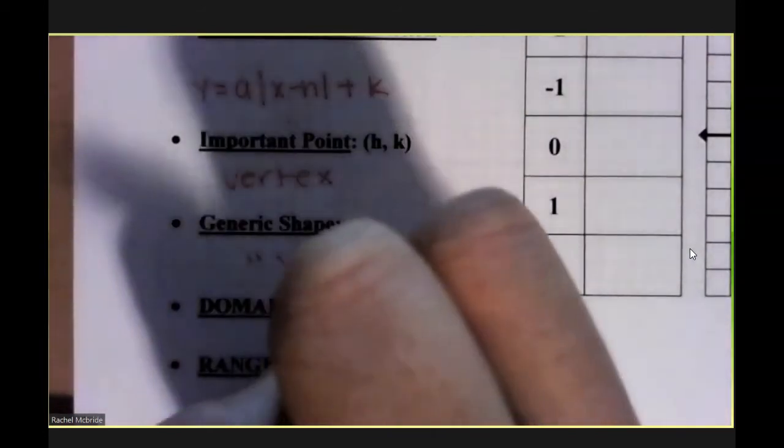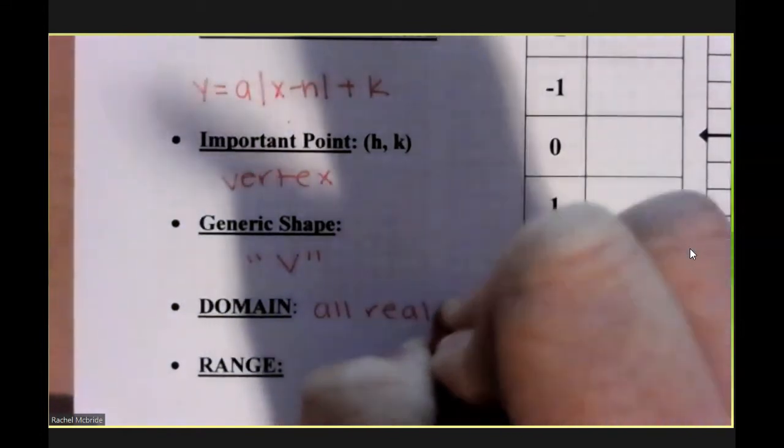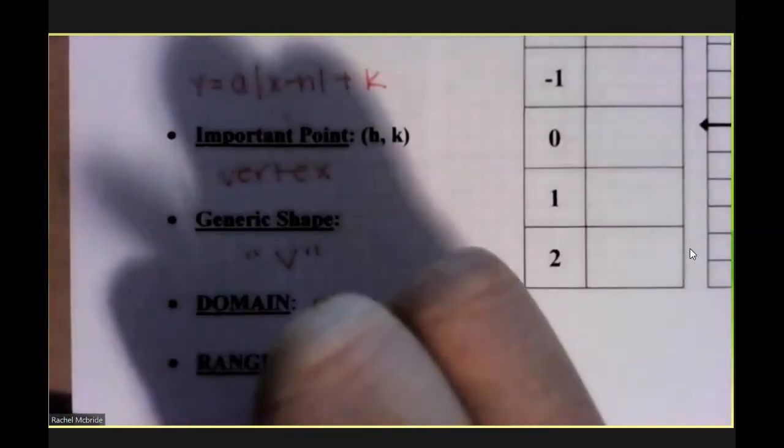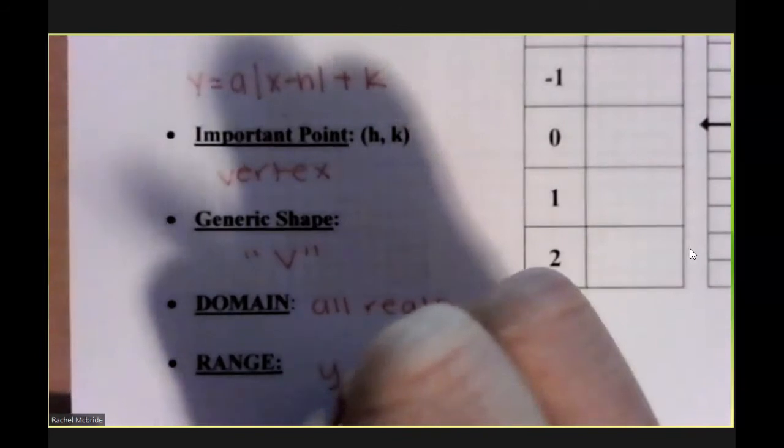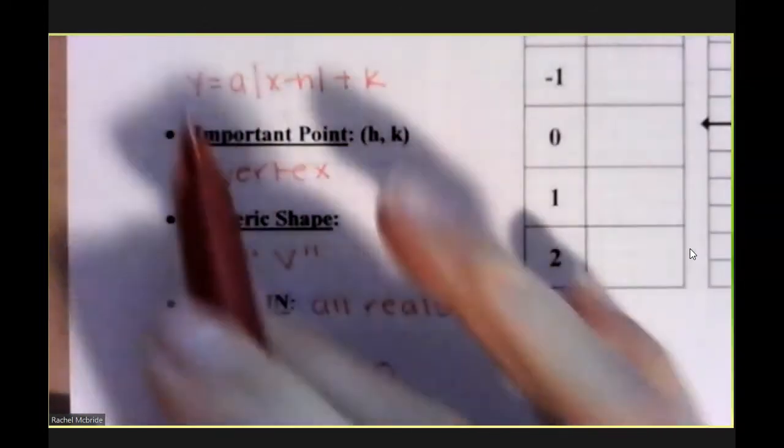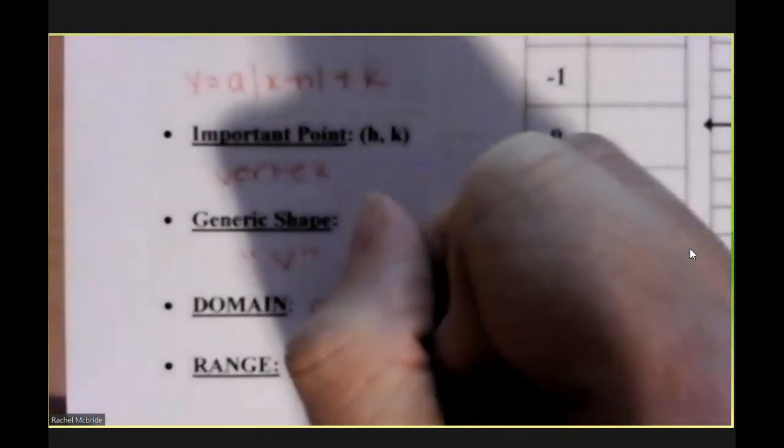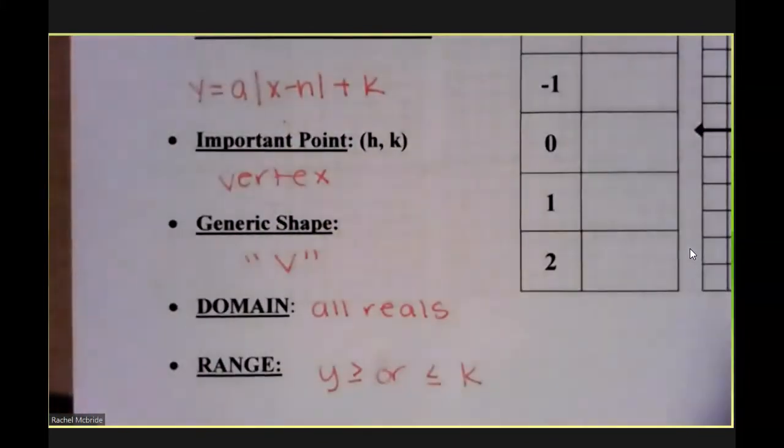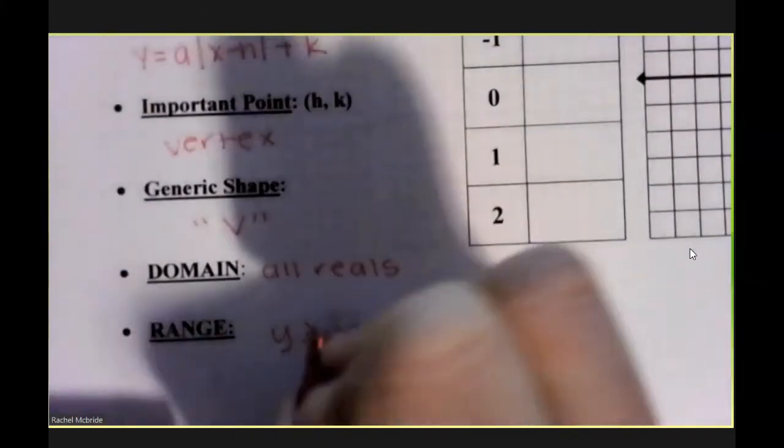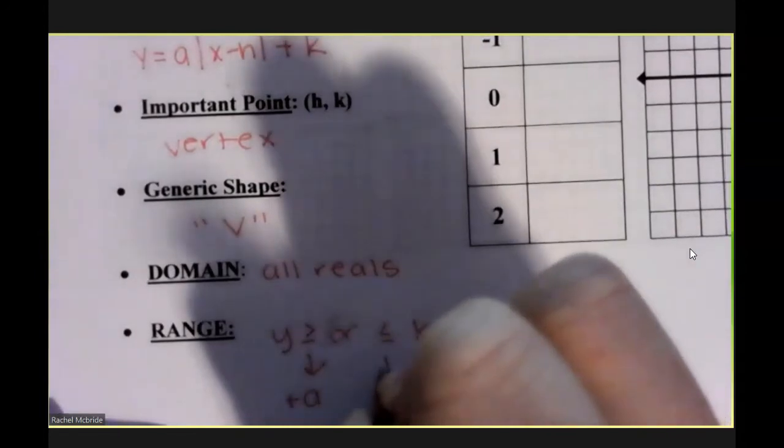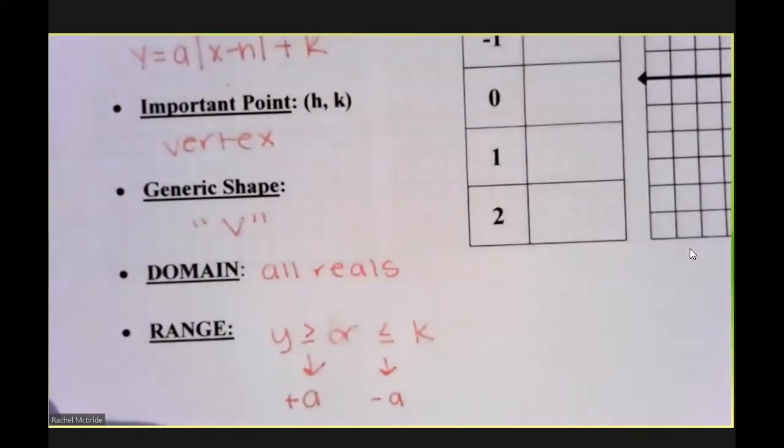The generic shape of an absolute value function is a V. The domain of an absolute value function is always all reals. And the range in the parent function is y greater than or equal to 0. But in terms of its transformation function, it will be y greater than or equal to or less than or equal to the k value. It will be greater than or equal to if the a value is positive. It will be less than or equal to if the a value is negative.